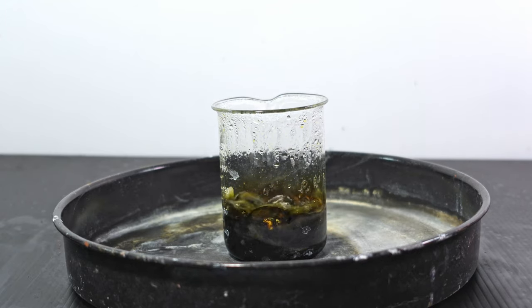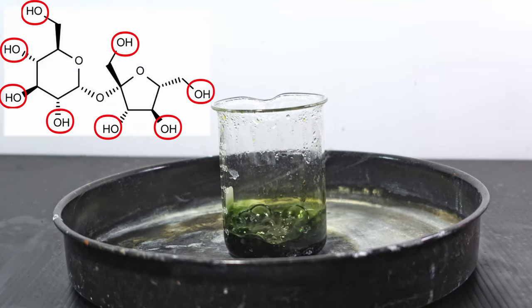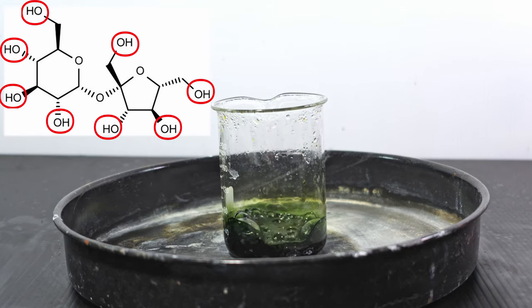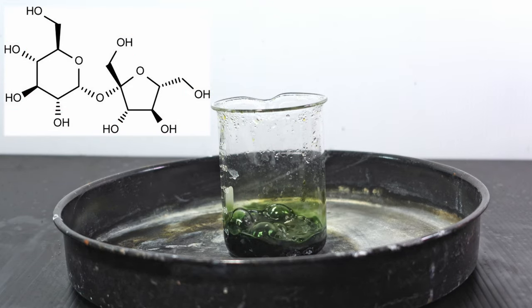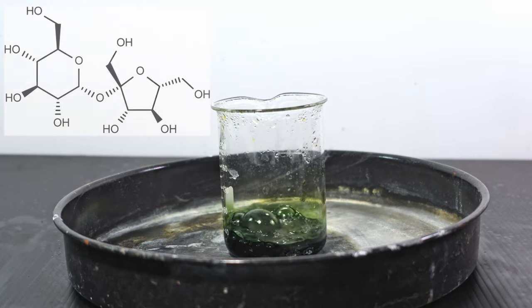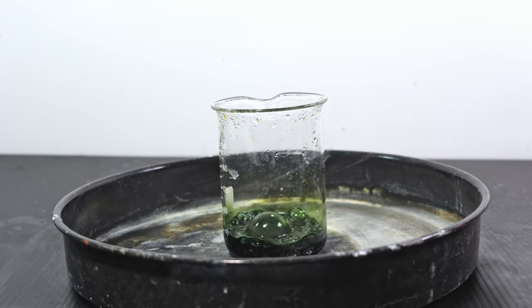The reason for this is that the sucrose molecule is full of hydroxyl groups. This makes the molecule ripe for oxidation. In fact, it is like a buffet for chromic acid, so much so that all the chromic acid is reduced to chromium-3, as indicated by the green color of the solution.